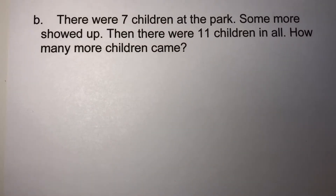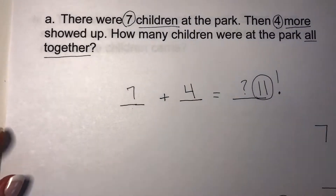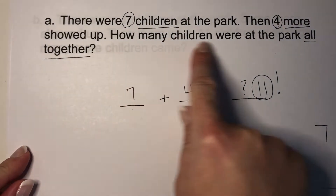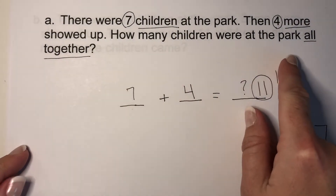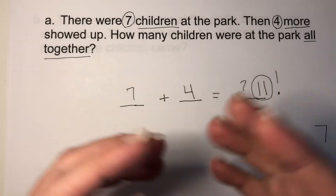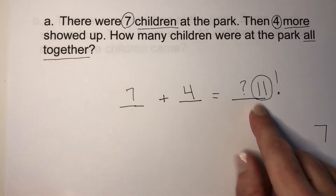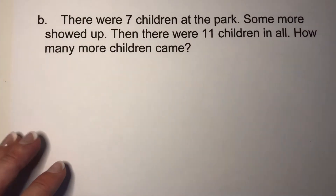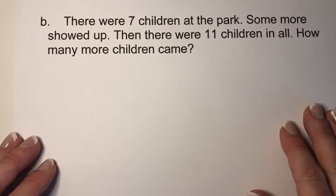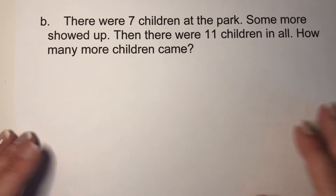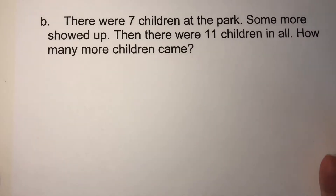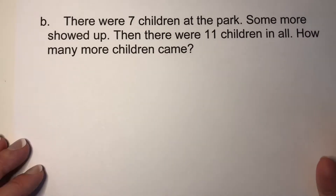Hi again, first graders. In our last video we looked at a problem where we talked about how many children were at a park when we add two numbers together — we just didn't know the total. Well this time we are going to look at where we don't know one of the other numbers. It's called the addend.